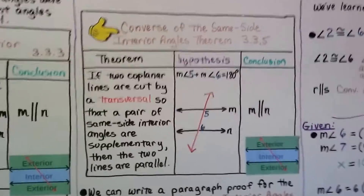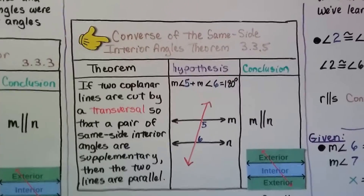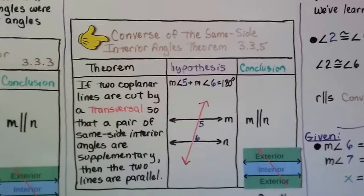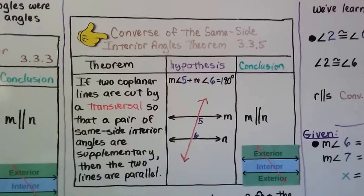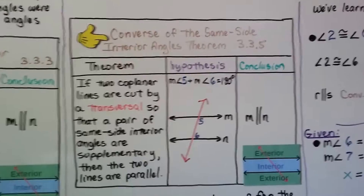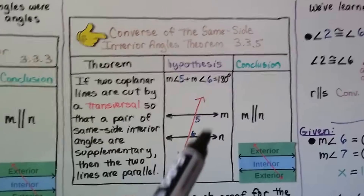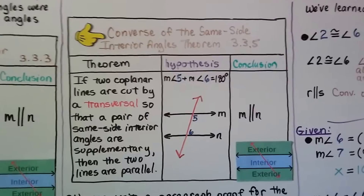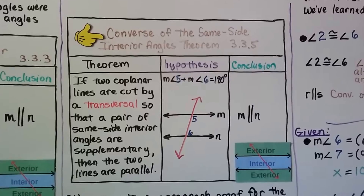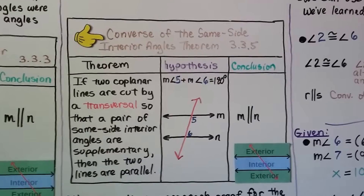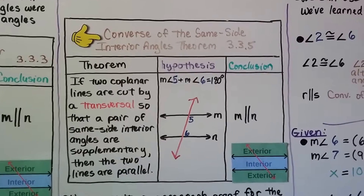Here's the converse of the same side interior angles theorem. It says if two coplanar lines are cut by a transversal so that a pair of same side interior angles are supplementary, then the two lines are parallel. Angles 5 and 6 are on the same side of the transversal and on the interior, and the measure of angle 5 plus the measure of angle 6 equals 180 degrees. Because of that, our conclusion is that m is parallel to n.